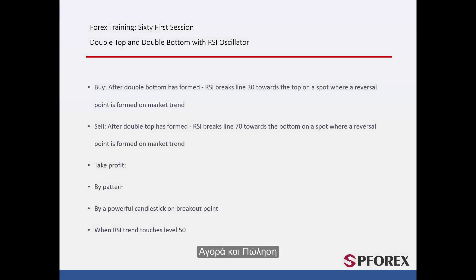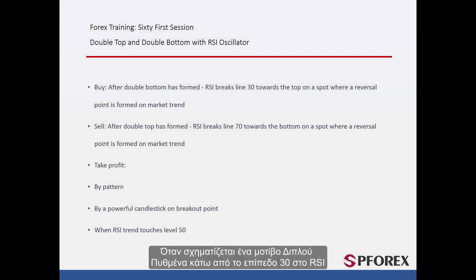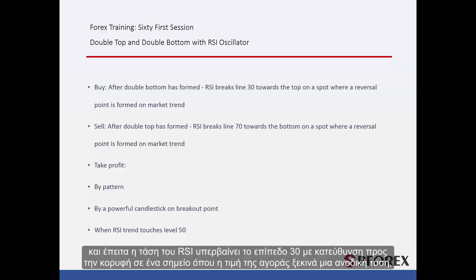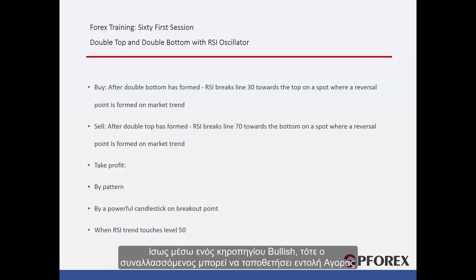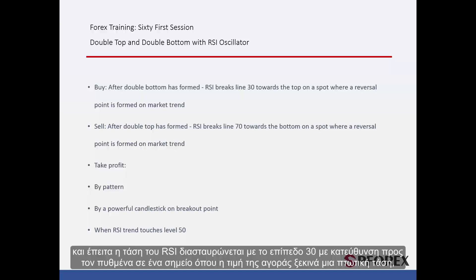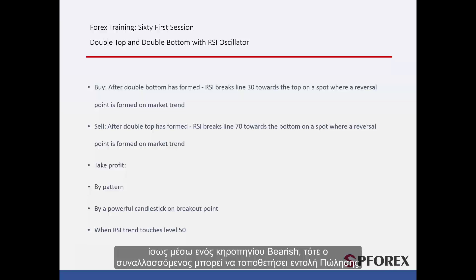Buy and Sell. When a double bottom pattern forms under level 30 in RSI and then the RSI trend crosses level 30 towards the top on a spot where market price starts an uptrend, maybe by a bullish candle, a buy order can be placed. When a double top pattern forms above level 70 in RSI and then the RSI trend crosses level 70 towards the bottom on a spot where market price starts a downtrend, maybe by a bearish candle, then a trader can place a sell order.